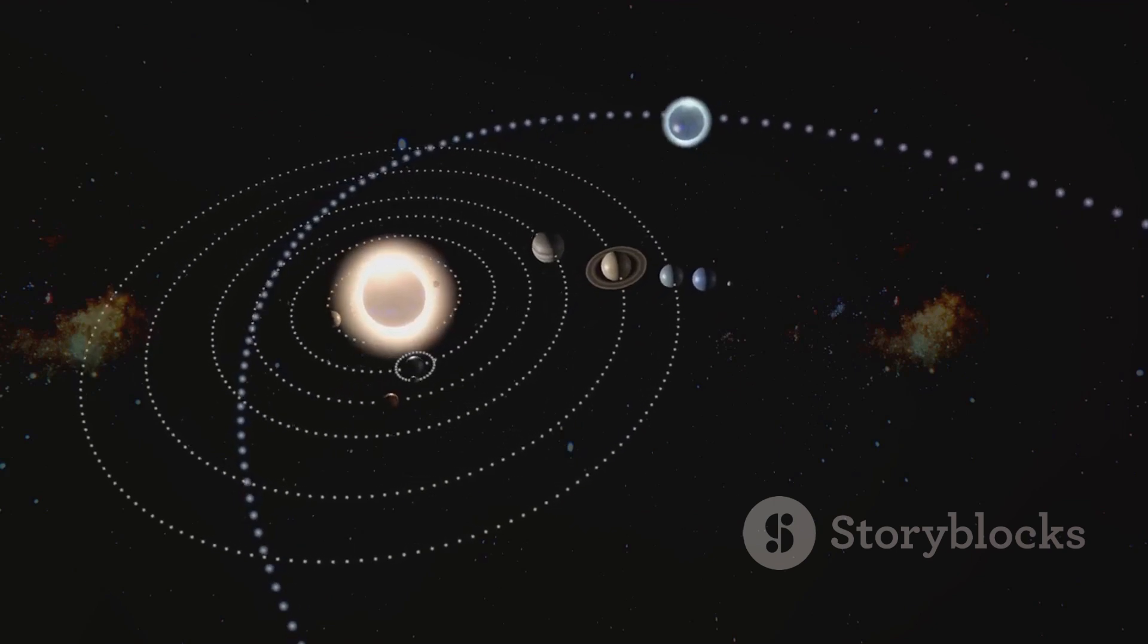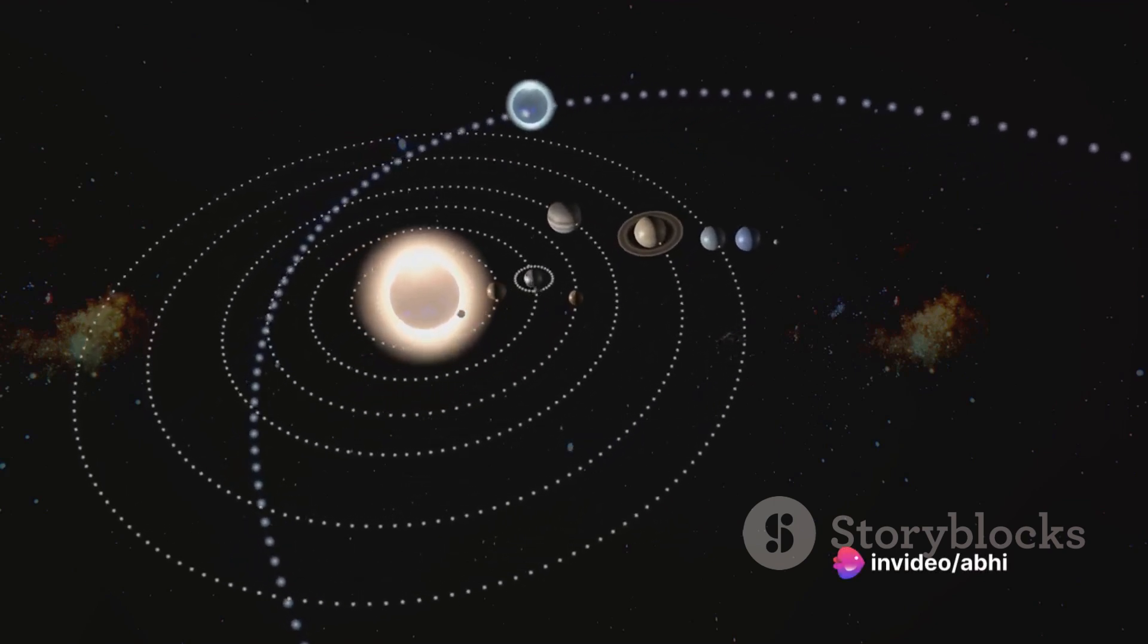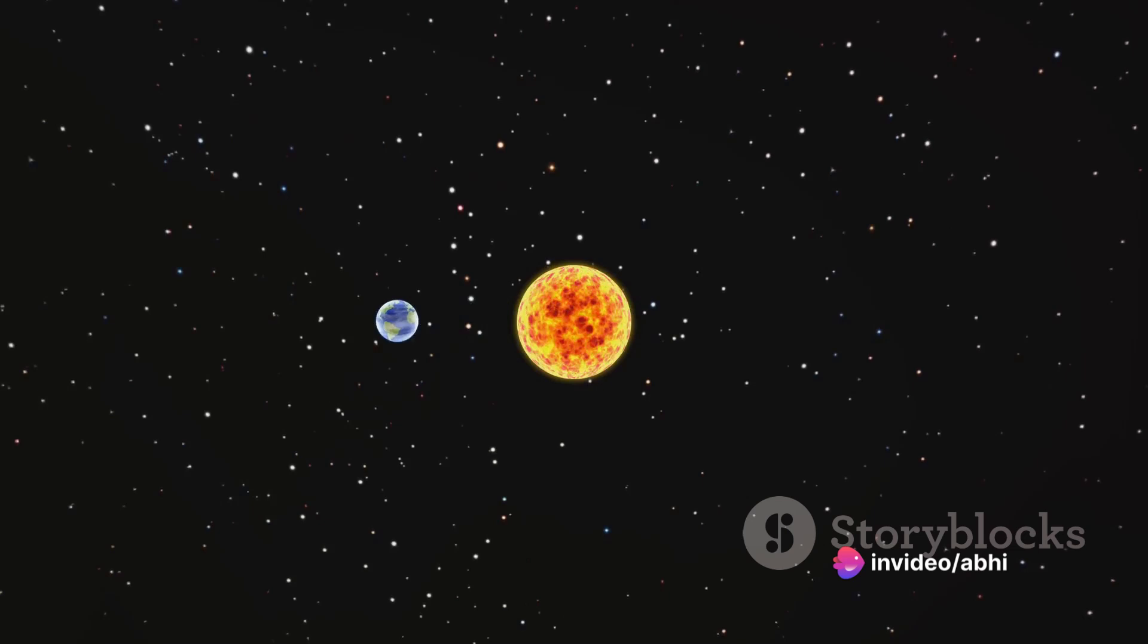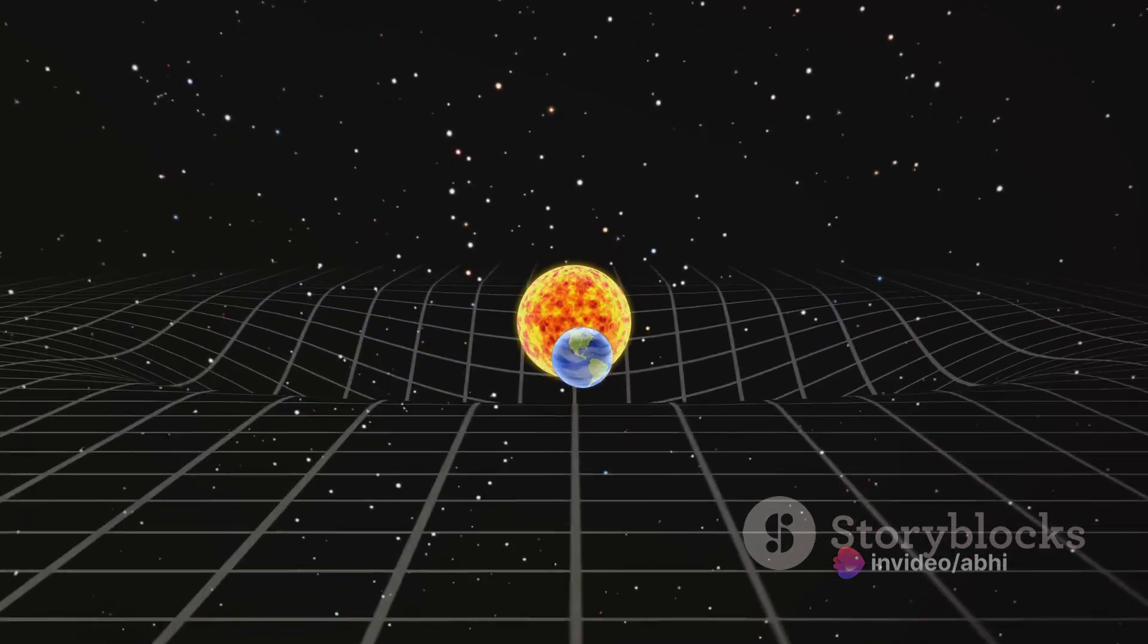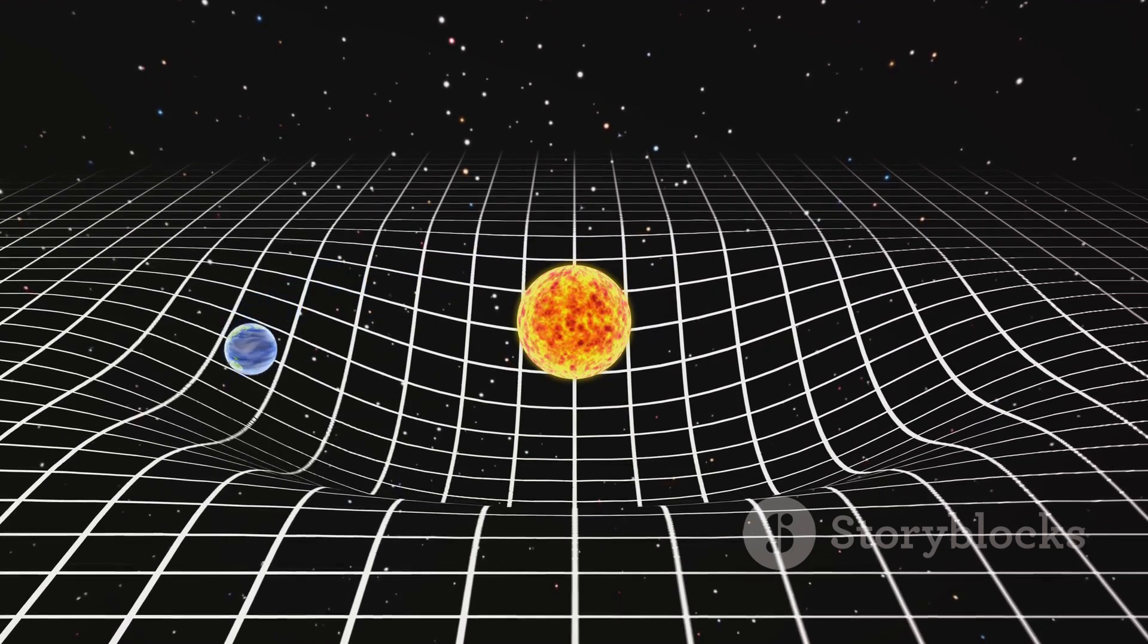When the planet is closer to the Sun, its gravitational attraction is stronger, pulling it more directly towards the Sun. As a result, the planet moves faster to maintain its orbit without plummeting into the Sun.